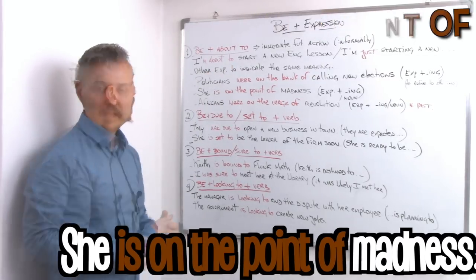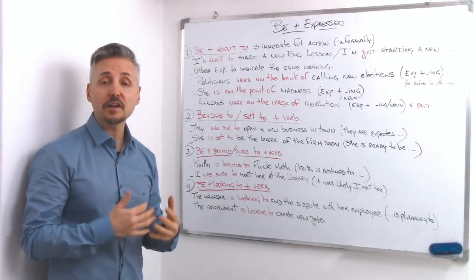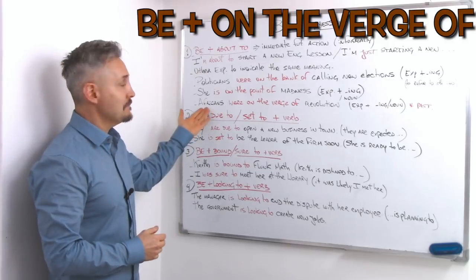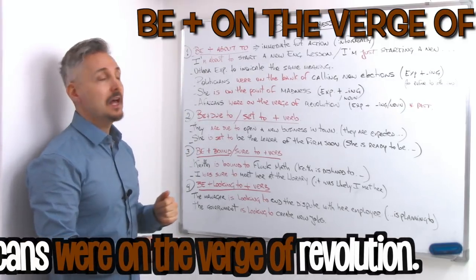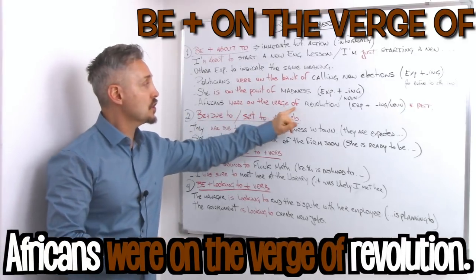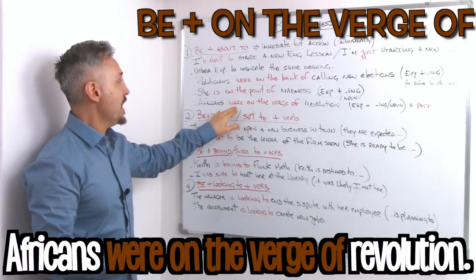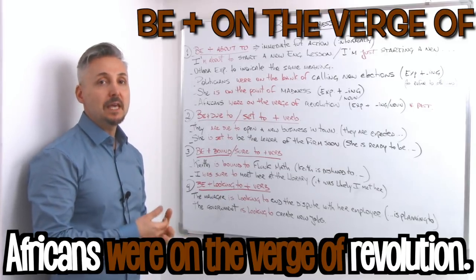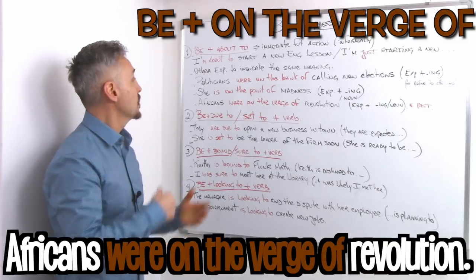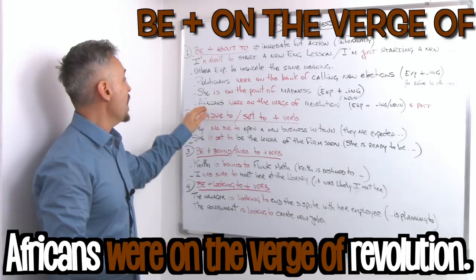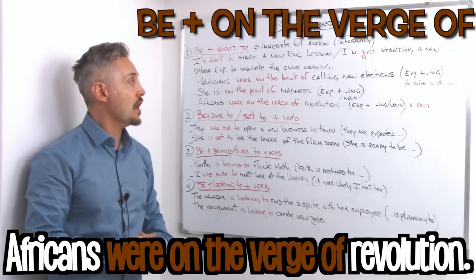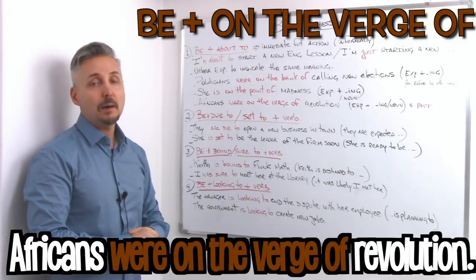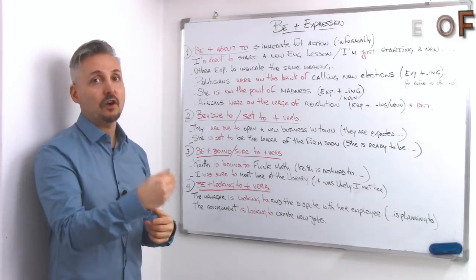Even though these expressions are used to refer to the future, you can even use it in the past. Like my example, Africans were on the verge of revolution. Here we have the verb to be plus on the verge of, which means be about to. So it's the same thing. Africans were on the verge of revolution. And we can even use the verb plus an ing after all.